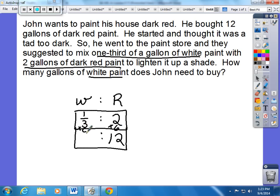Whatever you do to one side of a ratio, you have to do to the other. So I'm going to take one third and multiply it by six. This is going to go back to your elementary fifth grade fractions. I'm going to put a one underneath the six. I'm going to multiply the numerators. I'm going to multiply the denominators. This is six divided by three. He is going to need two gallons of white paint to help him lighten this up a shade.